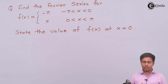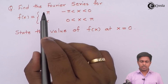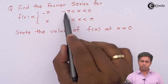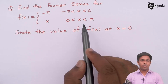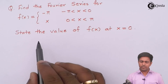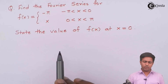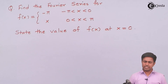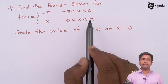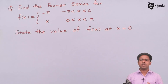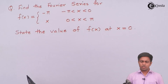We are going to find the Fourier series for f(x), which equals negative pi when x is between minus pi to 0, and f(x) equals x when x is between 0 to pi. We also have to state the value of f(x) at x equal to 0. The given range is from negative pi to pi, divided into two parts: negative pi to 0, and 0 to pi.